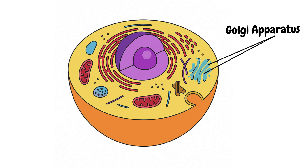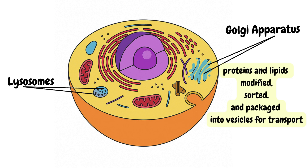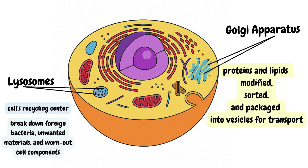Next we move to the Golgi apparatus and the lysosomes. Once molecules are produced in the endoplasmic reticulum, many are sent to the Golgi apparatus, or Golgi complex, for further processing. The Golgi apparatus is like the post office of the cell — here, proteins and lipids are modified, sorted, and packaged into vesicles for transport to other destinations either inside or outside the cell. Lysosomes are the cell's recycling center. They contain powerful digestive enzymes that break down foreign bacteria, unwanted materials, and worn-out cell compartments. Lysosomes can digest the cell's own compartments and are sometimes called suicide bags.